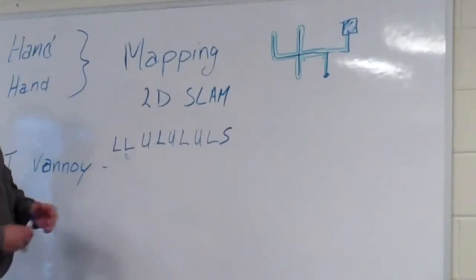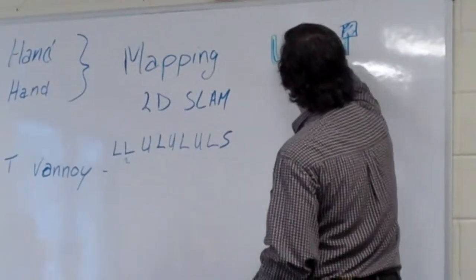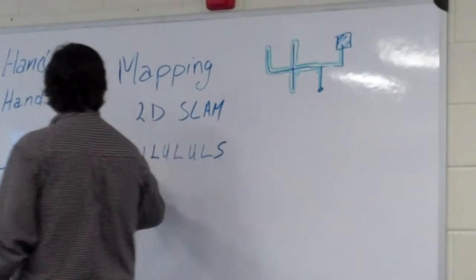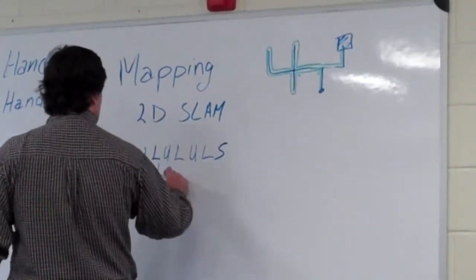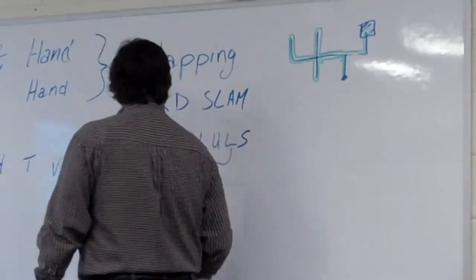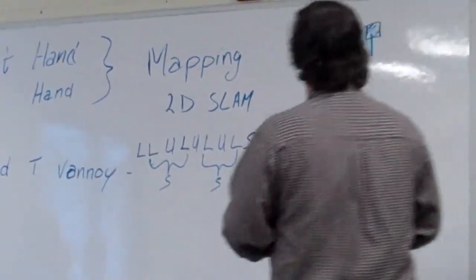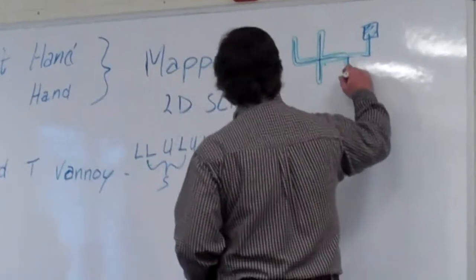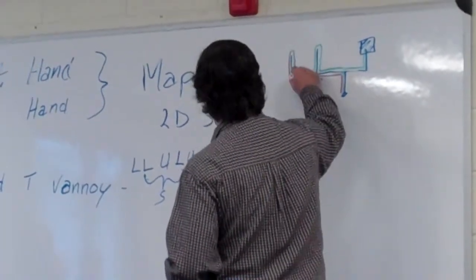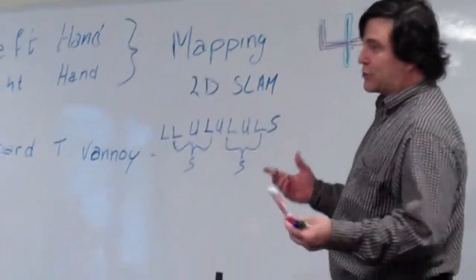So now let's reduce it. Anytime we have an L-U-L, like here would be one, L-U-L, that can be replaced by a straight. So then you just go through and say, all right, these guys here get replaced by a straight. And these guys here get replaced by a straight. So if we then go left straight, U-turn straight, we've met the goal. So we've done a partial reduction.